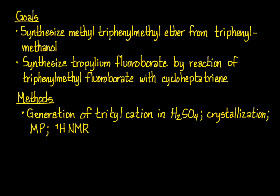The methods you will use in synthesizing methyl-triphenylmethyl ether involve generating a solution of the tridyl cation by reaction of triphenyl methanol with concentrated sulfuric acid. That solution of the tridyl cation can then be reacted with methanol to form the ether. The product will be isolated by crystallization and characterized by melting point and proton NMR.